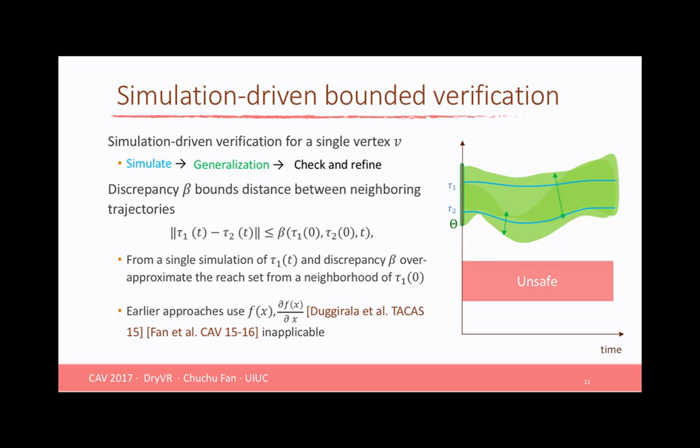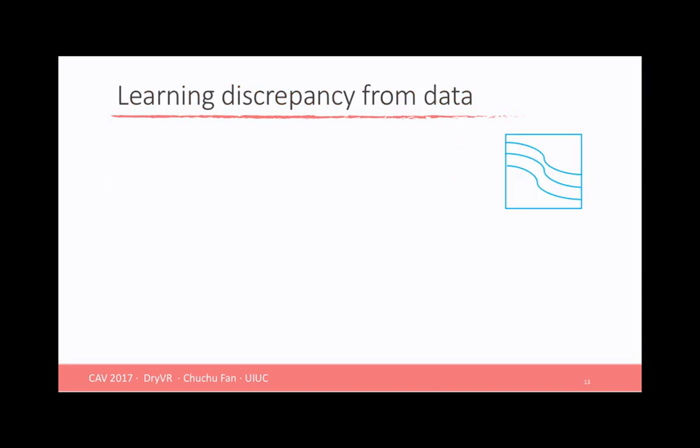We have a sequence of previous work on computing the discrepancy function, but they all heavily rely on the differential equation f and the derivative of f we call the Jacobian matrix. But here we only have executable access to the system. There may not be differential equations. How can we solve this problem? We are going to learn a discrepancy function from data.